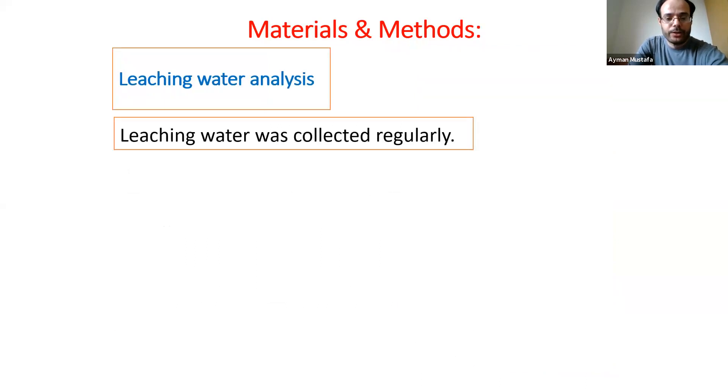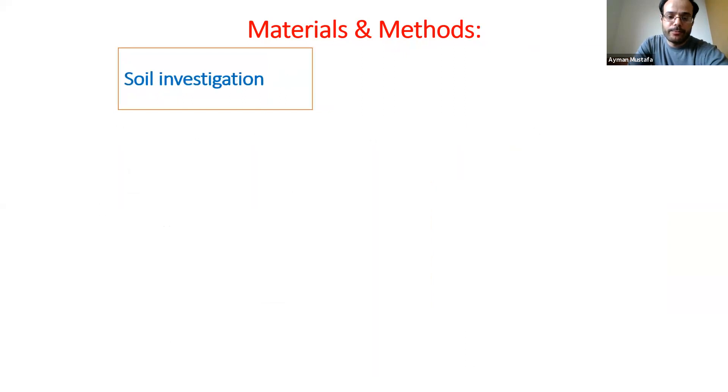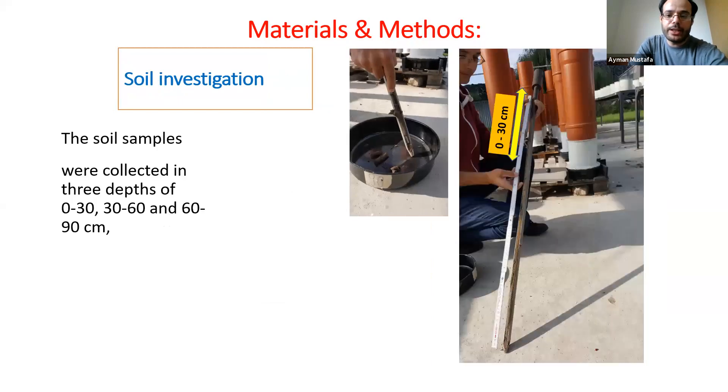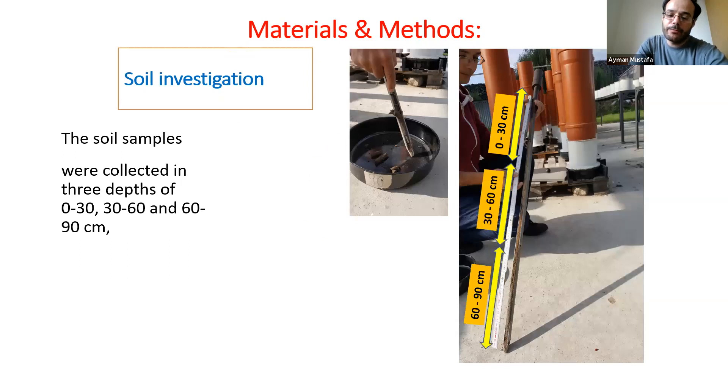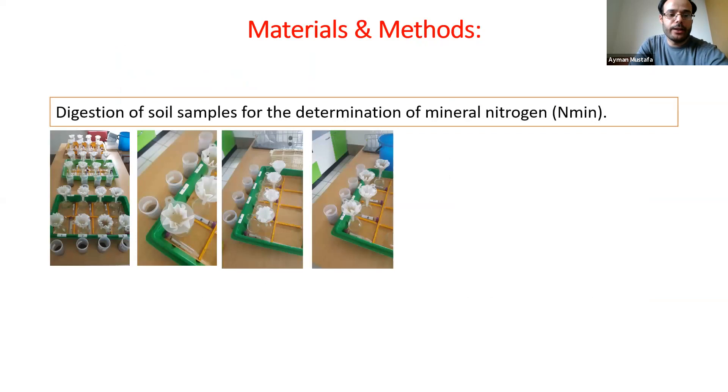The leaching water was collected regularly in this lower black part. We've collected them and we have taken soil samples at three depths: from 0 to 30, from 30 to 60, and from 60 to 90 centimeters by means of thin auger. And then we have taken the digestions of soil samples to determine the mineral nitrogen.